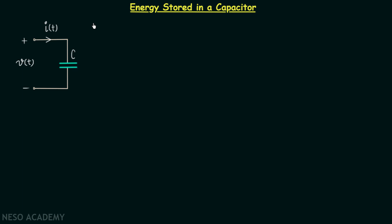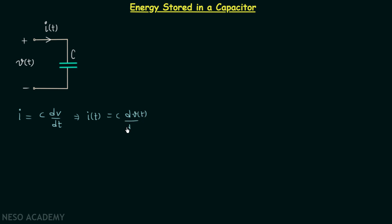In the last lecture we derived the relation between voltage across the capacitor and the current through the capacitor. We found the current through the capacitor is equal to C dV/dt. We can write I as I(t) because current is a function of time, and voltage as V(t) because voltage is also a function of time. So we have I(t) = C·dV(t)/dt.